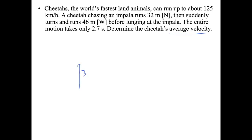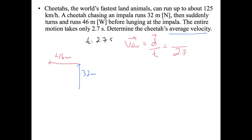The next question is very similar, but now we're looking for the average velocity. We draw our vectors: 32 meters north and 46 meters west, and our time is again 2.7 seconds. Average velocity equals displacement over time, so we need to find displacement.